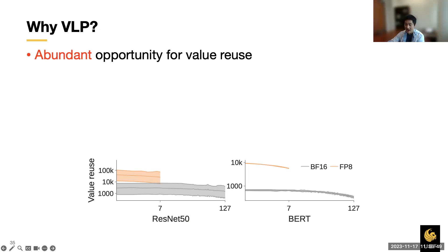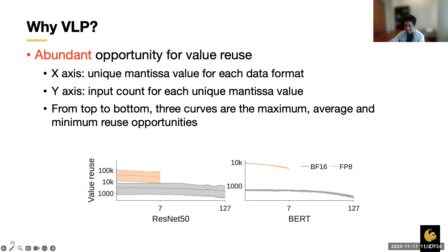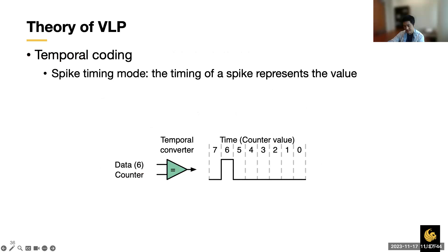Then for value-level parallelism, we observe consistently high opportunity in different settings. In this graph, the x-axis is the unique mantissa value for each data format. The y-axis is the opportunity for the value reuse, which measures how many inputs can reuse the same output. It is calculated as the input count for each unique mantissa value. Then the three curves from the top to the bottom are the maximum, average, and minimum reuse opportunity. In both vision and language models, we observe abundant reuse opportunity. The low-precision FP8 data format exposes more opportunities than the BF16. Outstanding the urgent need for the value-level parallelism, now I will present you the theory of VLP.